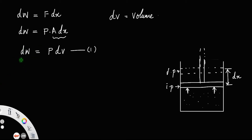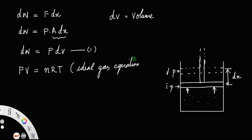We have PV equal to nRT. This is the ideal gas equation. Therefore, P is equal to nRT divided by V, where n is the number of moles, R is the universal gas constant, T is the temperature and V is the volume. Let us call this equation number two.